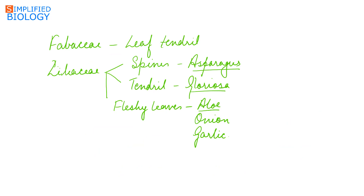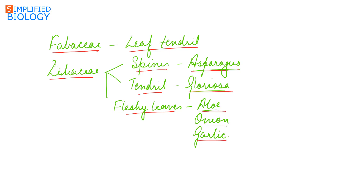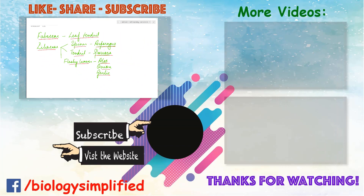In family Fabaceae, leaf tendrils are seen. In family Liliaceae, spines can be seen as in Asparagus; tendrils can be seen, for example in Gloriosa; and fleshy leaves can be seen in case of Aloe, onion, and garlic. That's all for today. Please do like, subscribe, and comment, and also visit our website by clicking on the link given below. Thank you for watching.